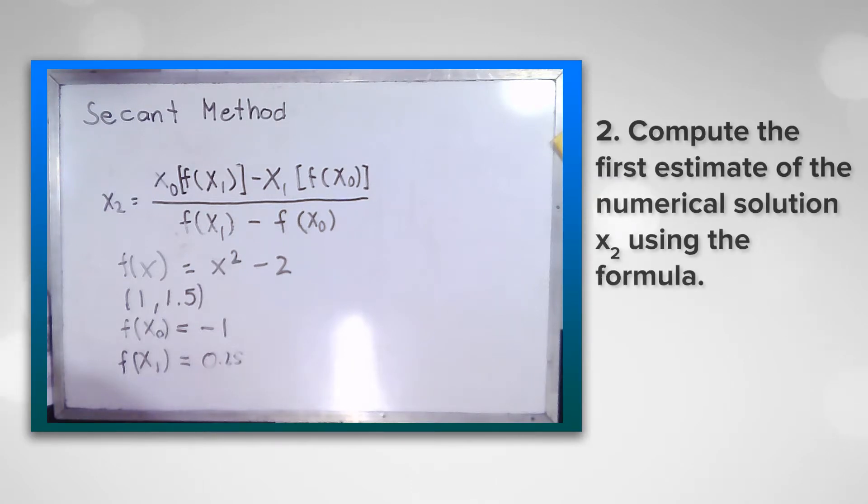Step 2: compute the first estimate of the numerical solution x₂ using the formula x₂ which you see now on the screen. x₂ equals x₀ times f(x₁) minus x₁ times f(x₀) over f(x₁) minus f(x₀).